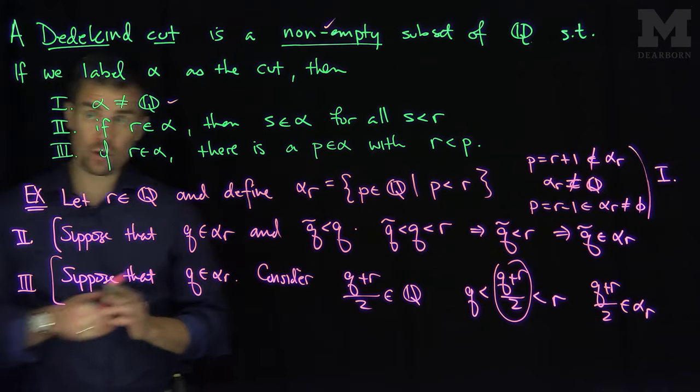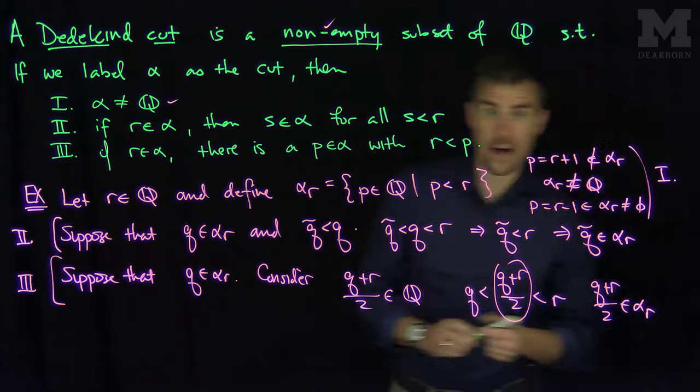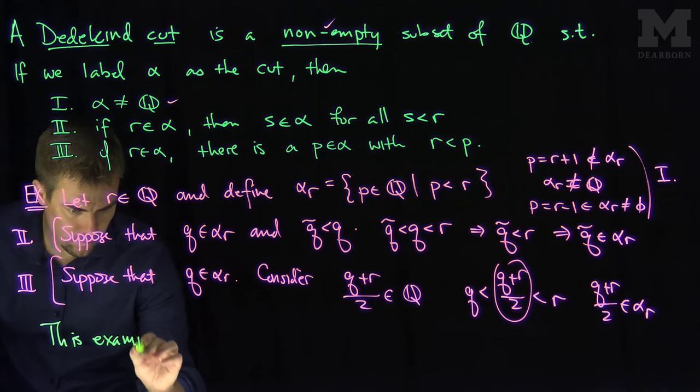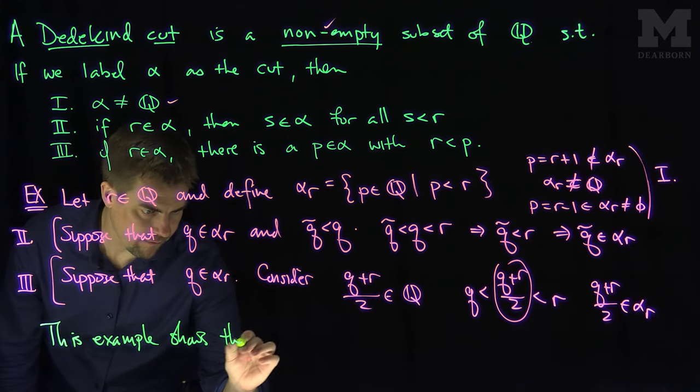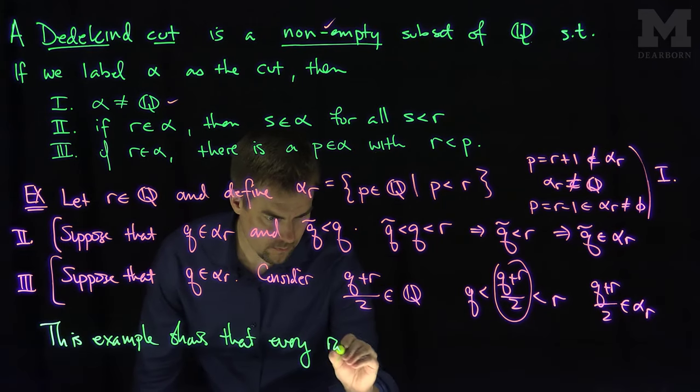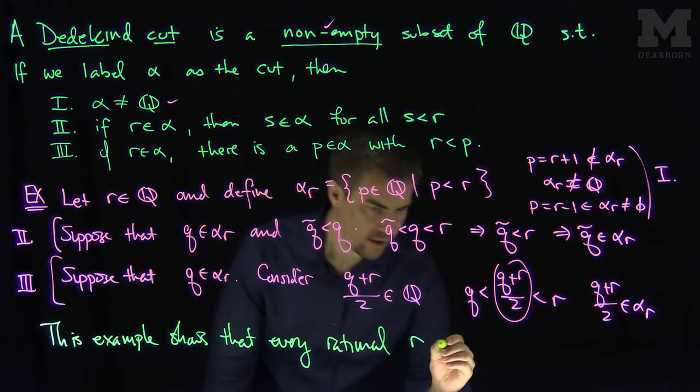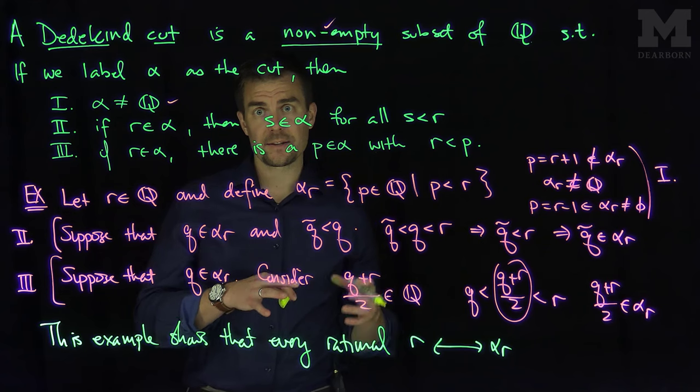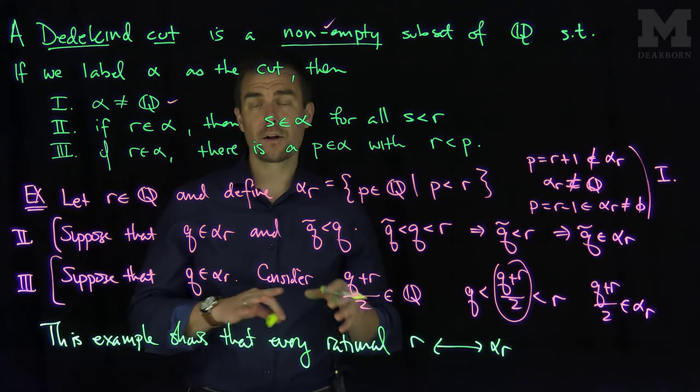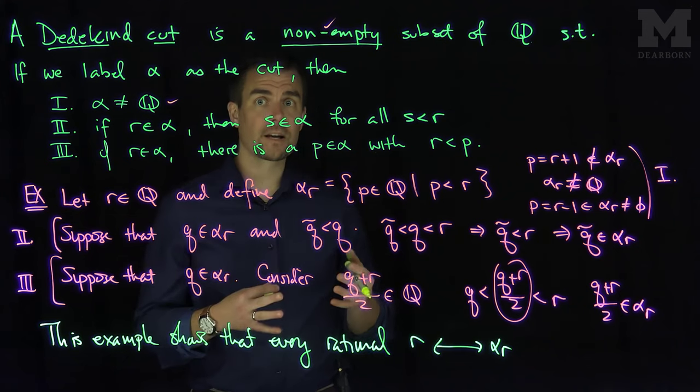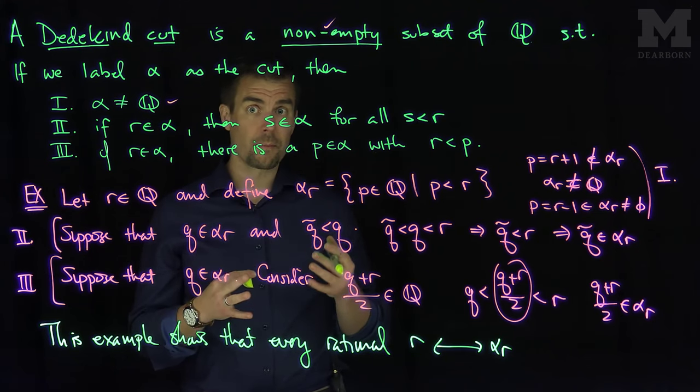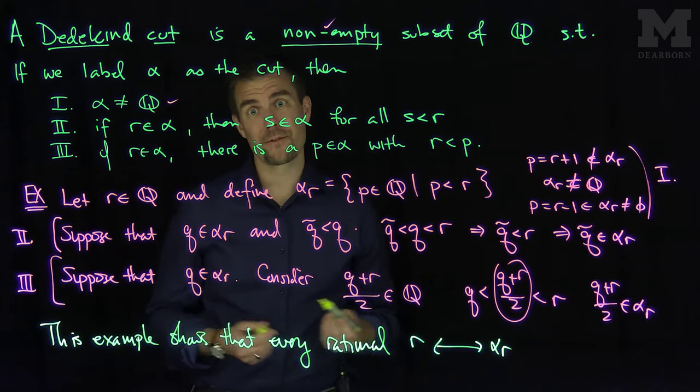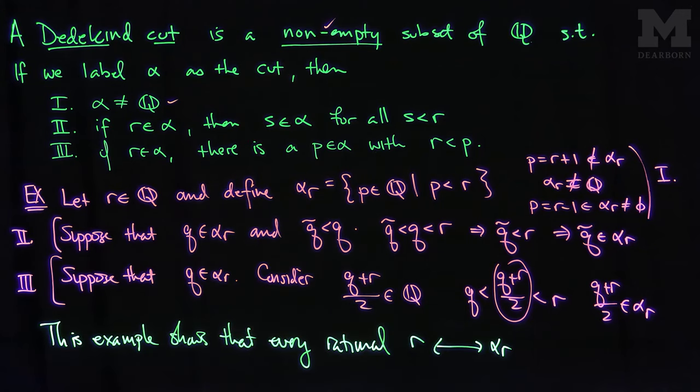So in this way we see that every rational number R corresponds to a cut alpha R. This example shows that every rational R corresponds to an alpha R which is a Dedekind cut. In further videos, we'll extend this idea and look at the set of all Dedekind cuts. The set of all Dedekind cuts will be our definition of the set of real numbers. We'll show that that definition satisfies the least upper bound property, so that supremums and infimums of sets exist in the set R. Thank you very much.